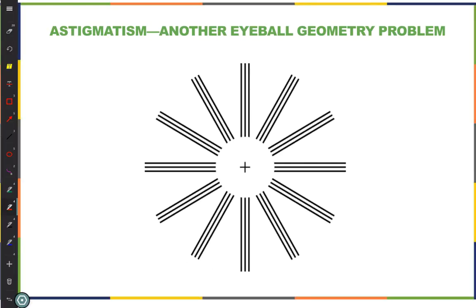If you have no astigmatism, all those lines in the test image will look the same — the same amount of black versus white. But if you have astigmatism, some lines will look darker because you're not focusing well on them, which makes them look whiter. You identify which line looks darkest — say it's line E — and that tells the optometrist you have astigmatism on that axis.